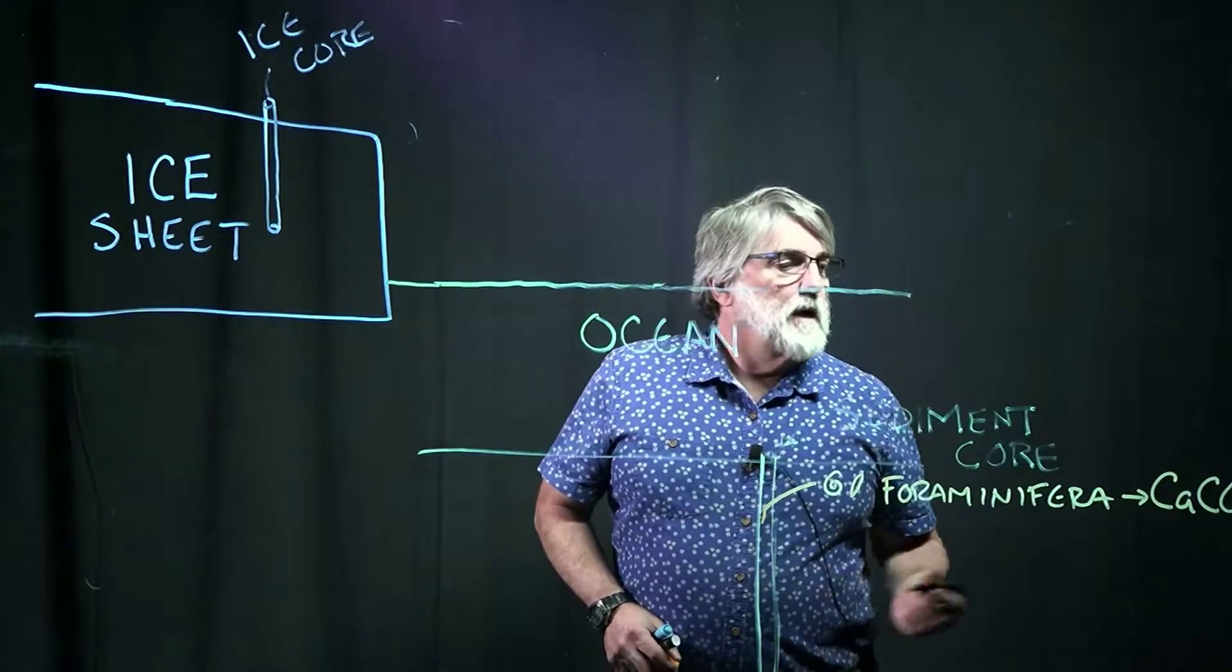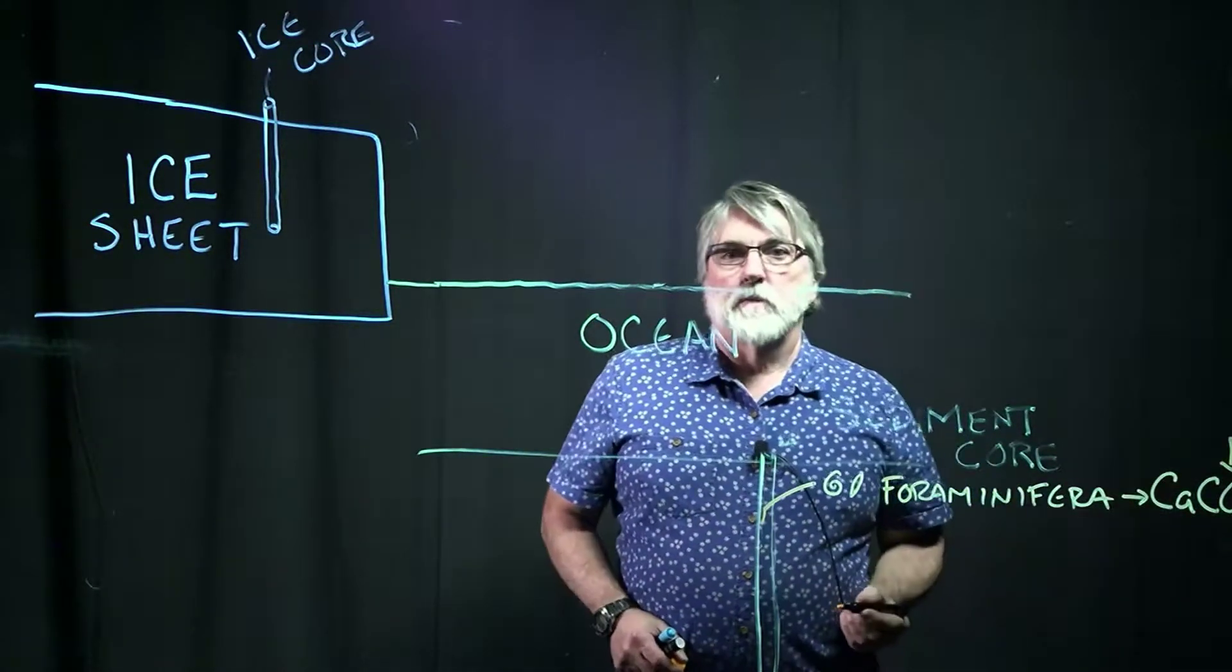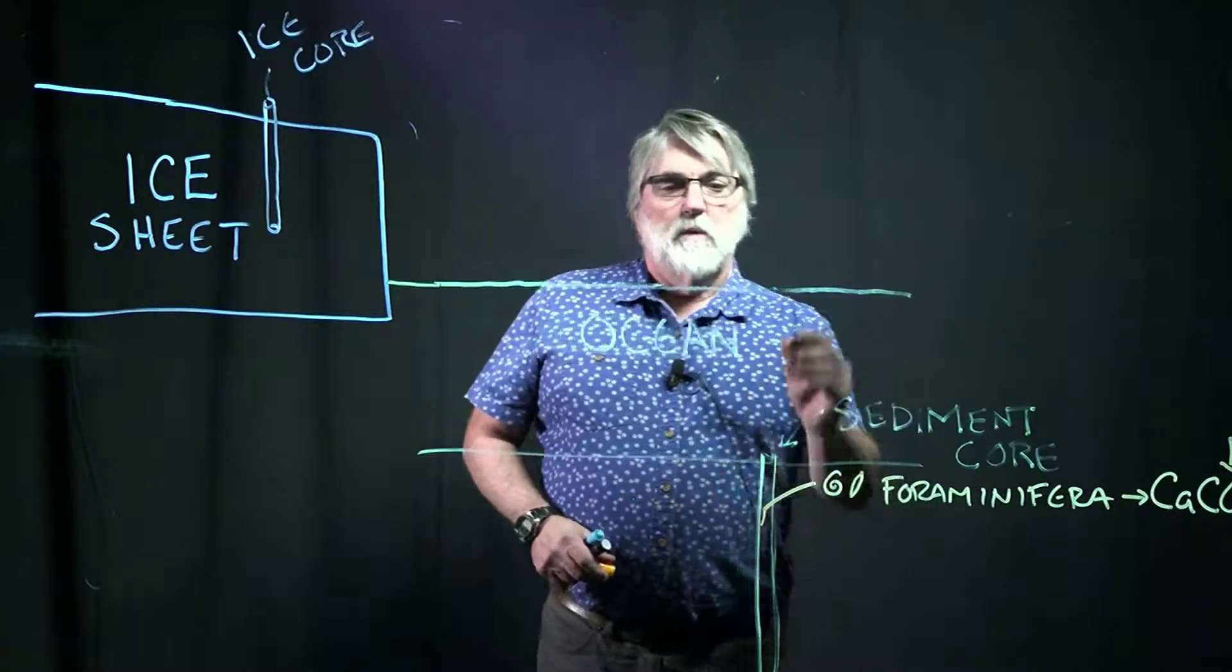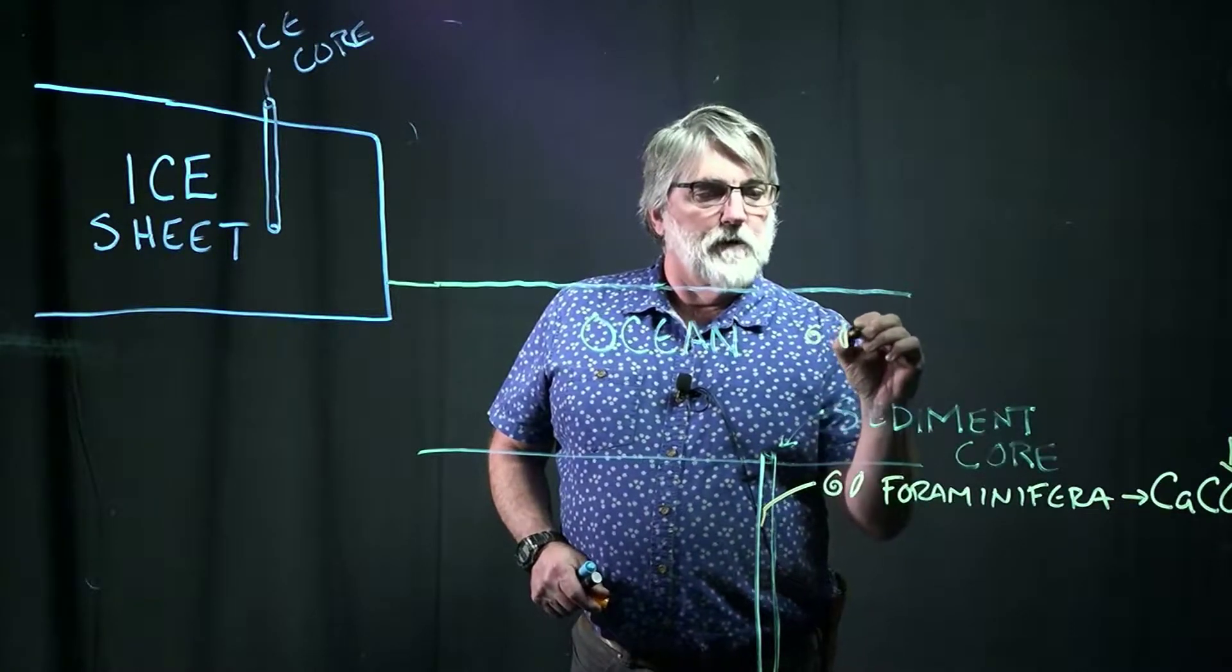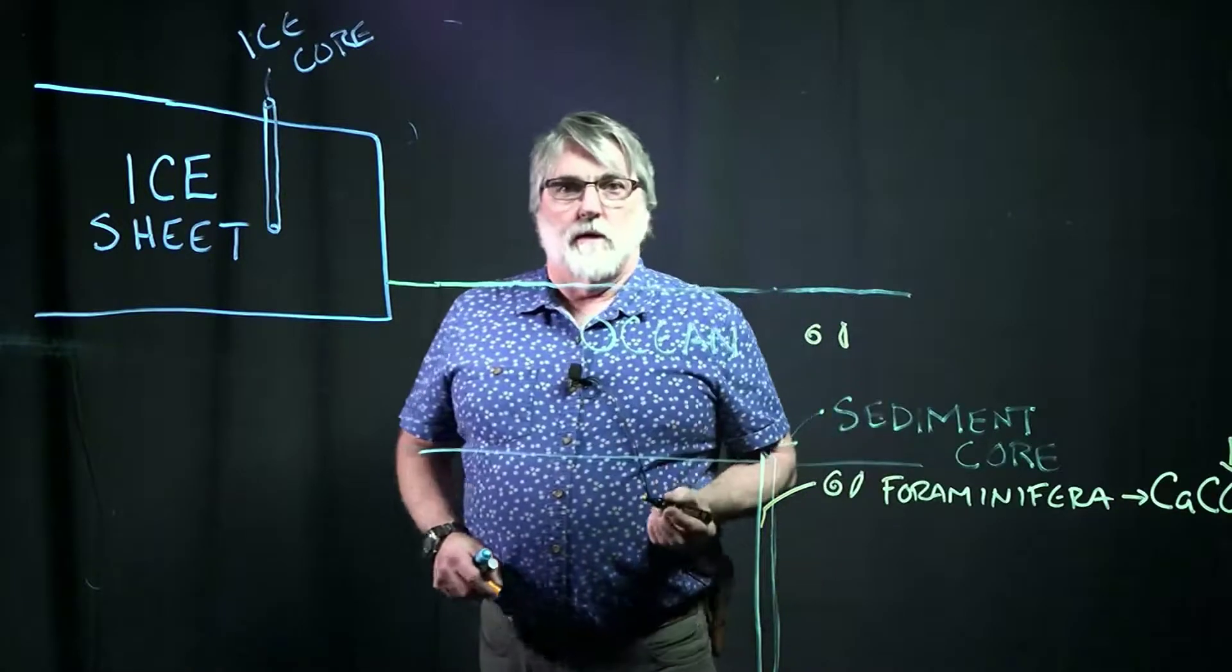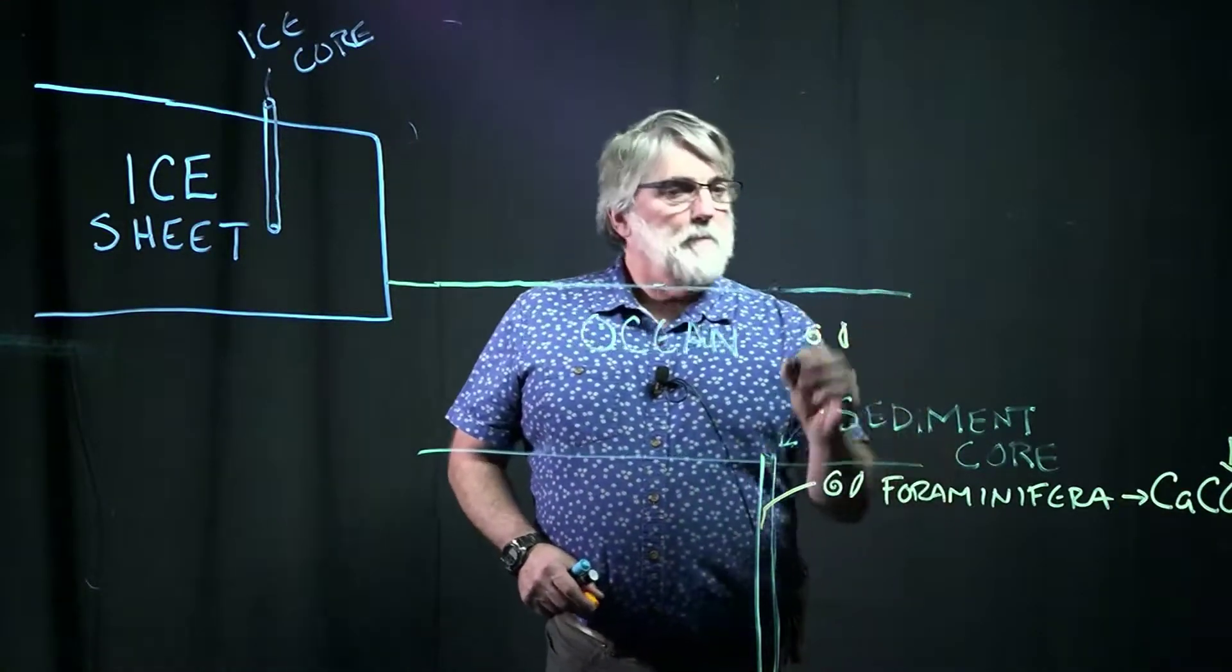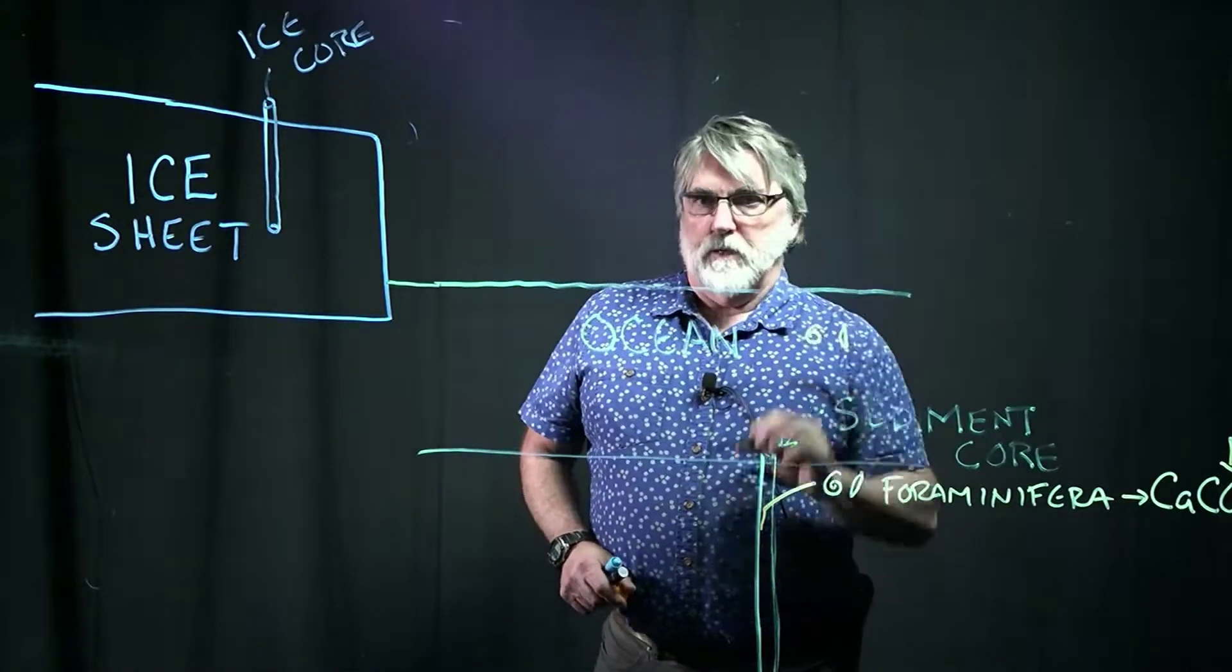And guess what, their shells are made of calcium carbonate. Same thing that makes up limestone. Oh my, look what's in there: oxygen. So it turns out that these forams, when they were living up here, so here's a little foram floating around, they are building their shells out of this ocean water. They're making their shells out of this ocean water, and they are sampling the isotopic ratio of the water that they formed in.